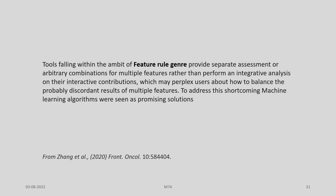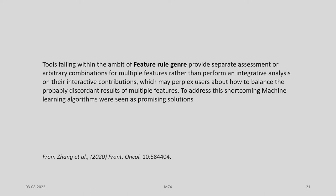To address these shortcomings, machine learning algorithms were seen as promising solutions. Under the machine learning genre, given that the weights of multiple features remain uncertain, resources resort to mathematical algorithms that systematically integrate features for refining optimal gRNAs. These models differ in algorithms and training data. Doench et al. observed the depletion rates of gRNA targeting cell surface markers in mouse and human cells and attributed them to the intrinsic nucleotide composition of target sequences, which acted as training data to construct a logistic regression classifier for gRNA activity prediction.